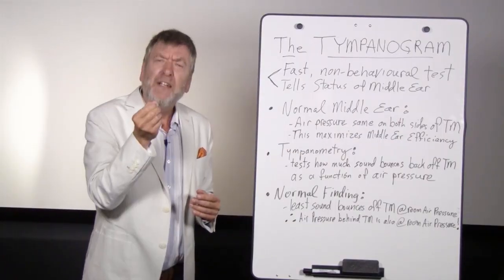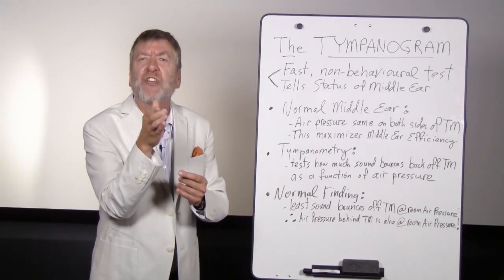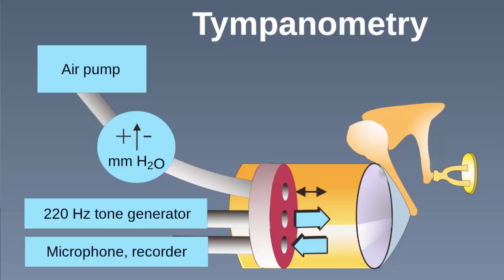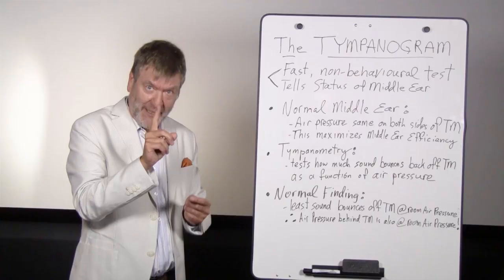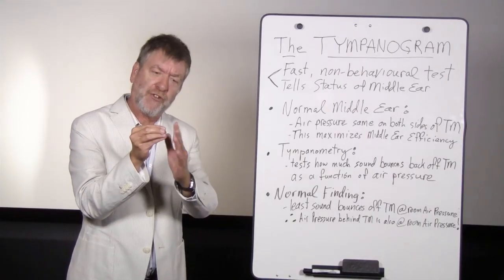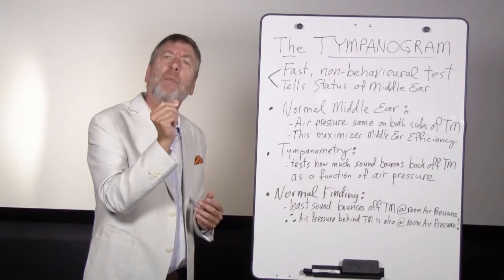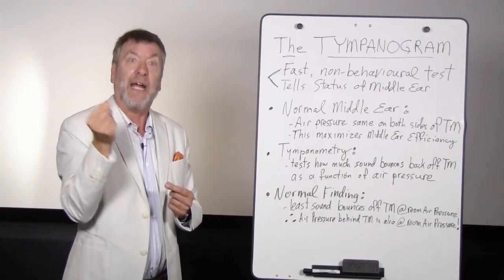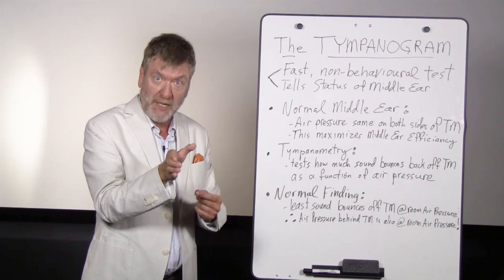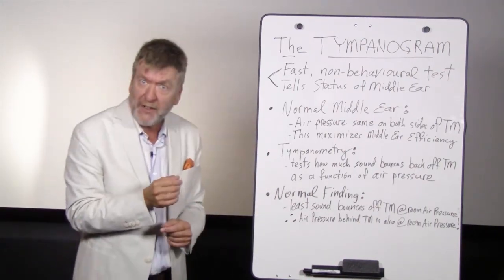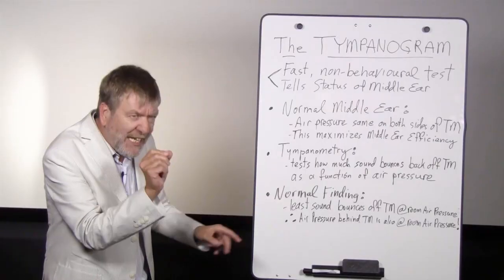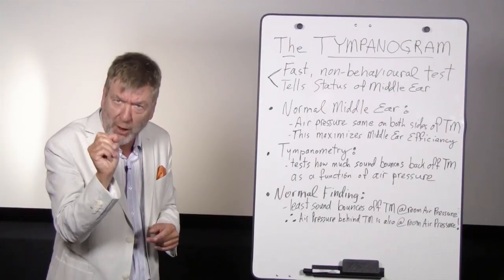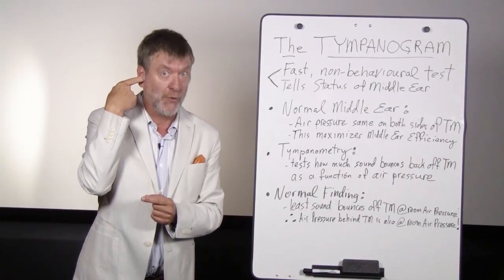Unlike pneumatic otoscopy, which assesses how much the eardrum actually wiggles or moves with air pressure, tympanometry is different. Tympanometry tests how much sound bounces back off the tympanic membrane as a function of air pressure changes in the outer ear canal. The clinician examines how much sound is bouncing back off the eardrum as the air pressure is changed from positive to room air pressure to negative.